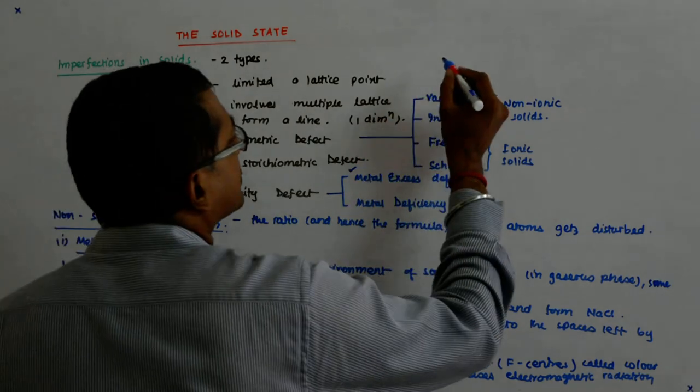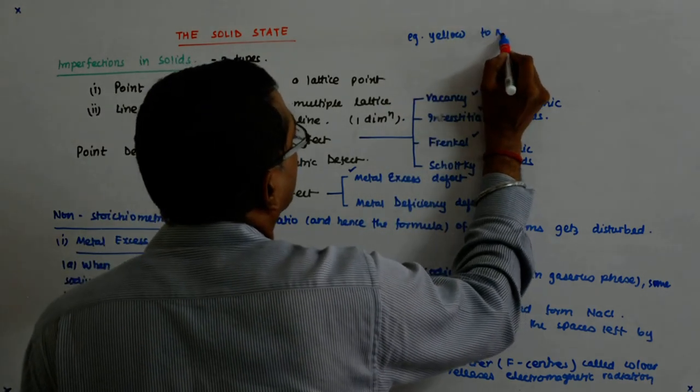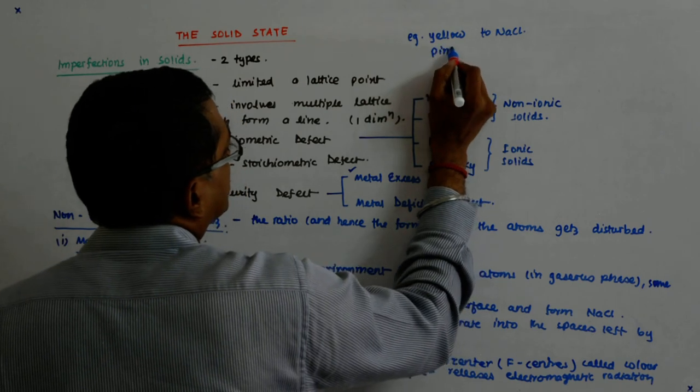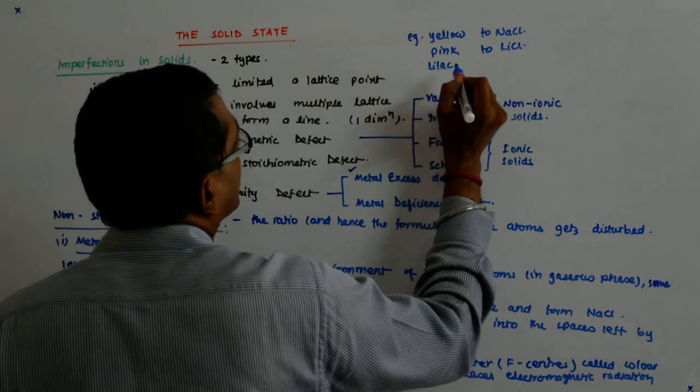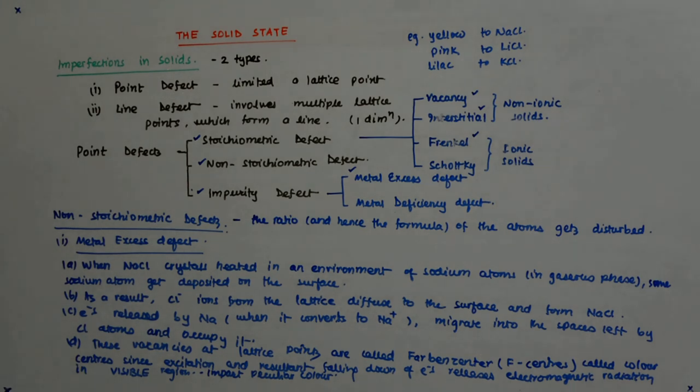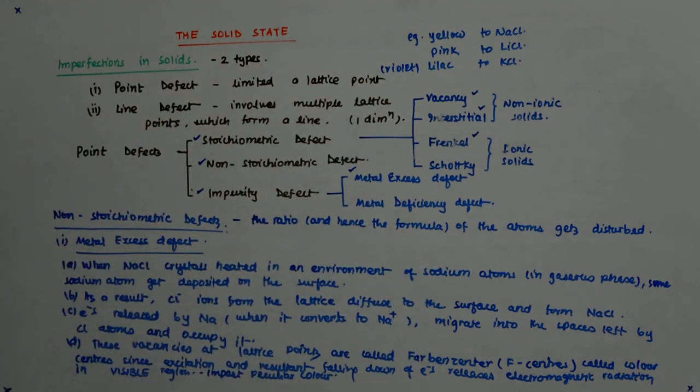Examples: yellow to NaCl, pink to LiCl, and violet or lilac to KCl and CsCl.